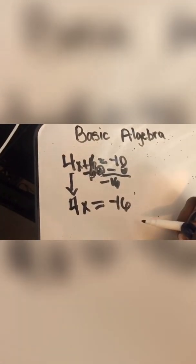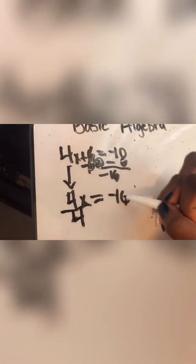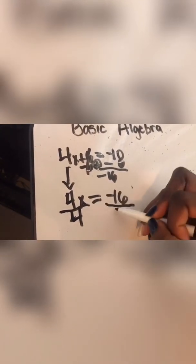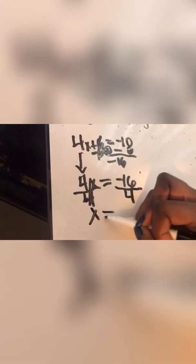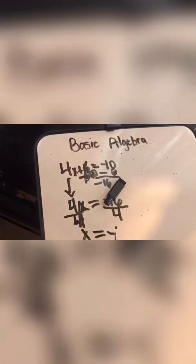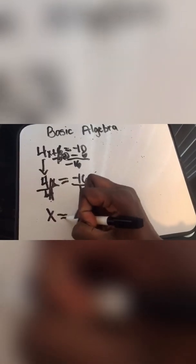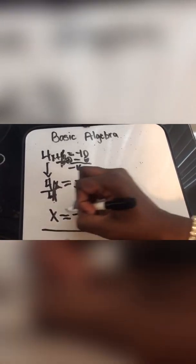And we have to simplify it. We're going to simplify it by dividing by 4 on each side. We're going to divide on each side by 4. This becomes x equals negative 4. And that will be your final answer.